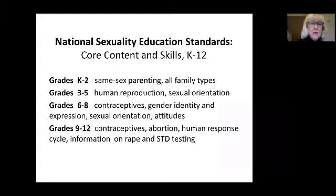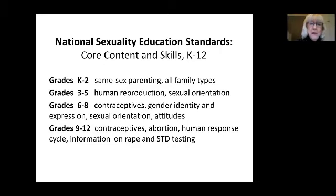In grades 3 through 5, they will be taught the male and female reproductive systems, including body parts and their functions, describe the process of human reproduction, and be able to define sexual orientation. These are children ages 9 to 11.